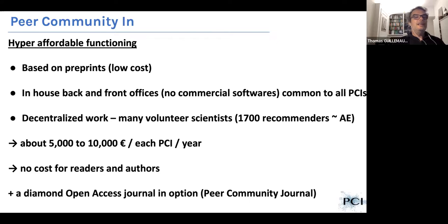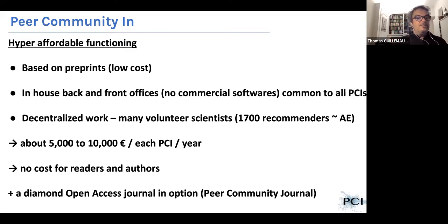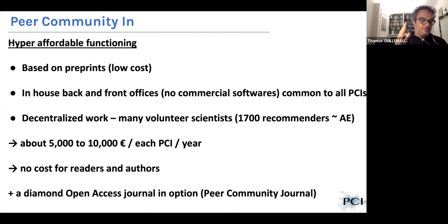The functioning of PCI is hyper-affordable. It's basically because it is based on preprints, which are very low cost. We use in-house back and front offices with no commercial software, and all of this is common to all of the PCIs. The scientific work of evaluation is completely decentralized because there are many volunteer scientists working as associate editors. The consequence is that the functioning cost of each PCI is less than 10,000 euros per year. It is so low that there is no need for a cost for readers or for authors — it's a free service to readers and authors. And there is this option of using the Peer Community Journal, a diamond open access journal, again with no cost for authors and readers.